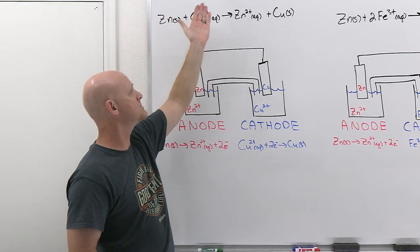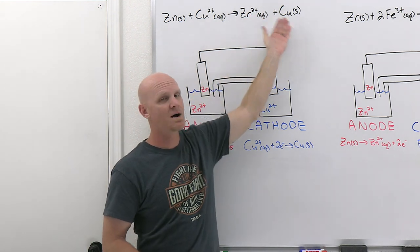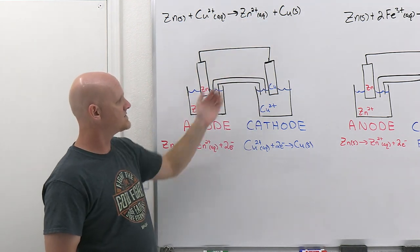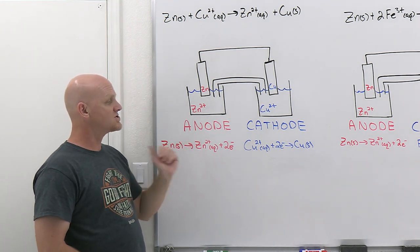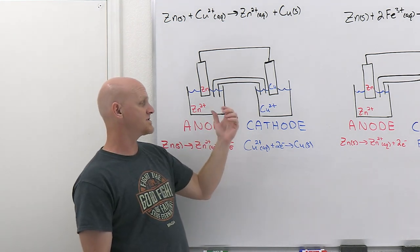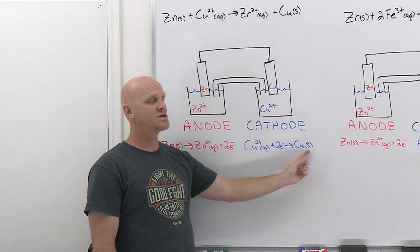Zinc solid plus copper 2+ gives you zinc 2+ plus copper solid, so we identified that zinc was the anode and copper was the cathode. The reaction here at the anode was zinc going to zinc 2+, half reaction I should say.